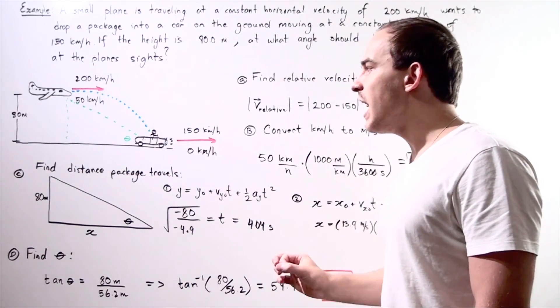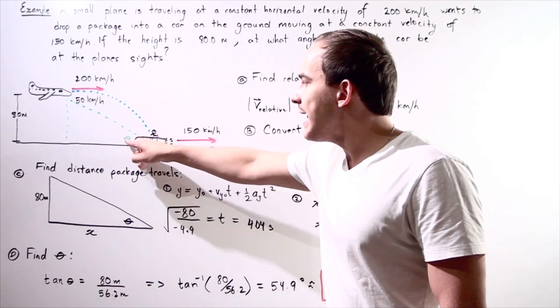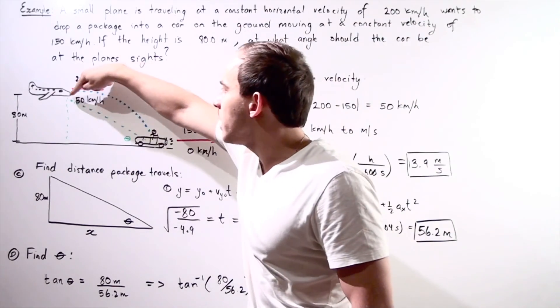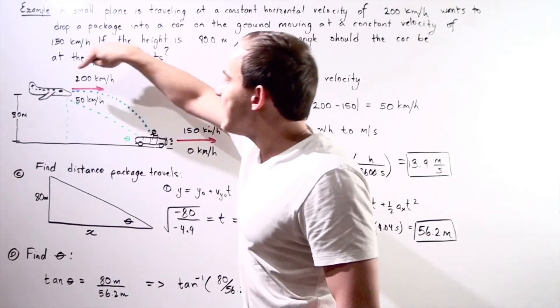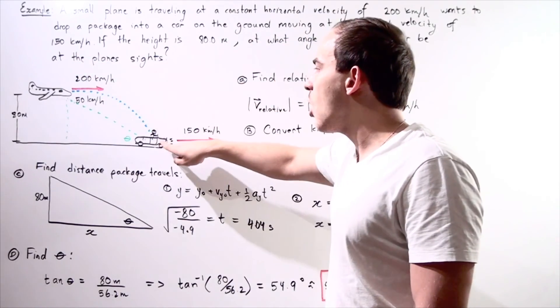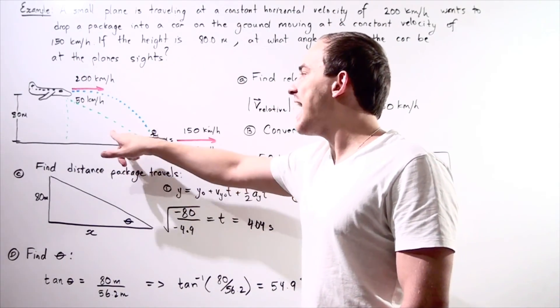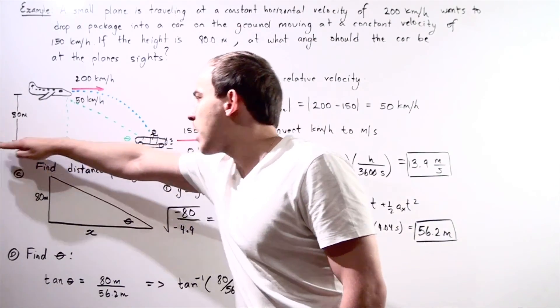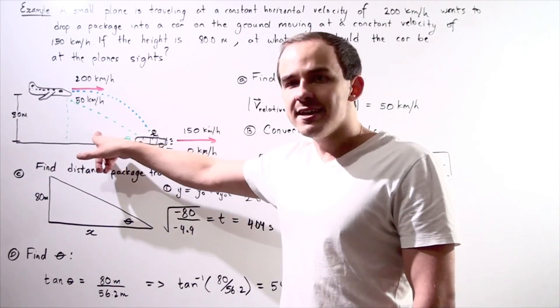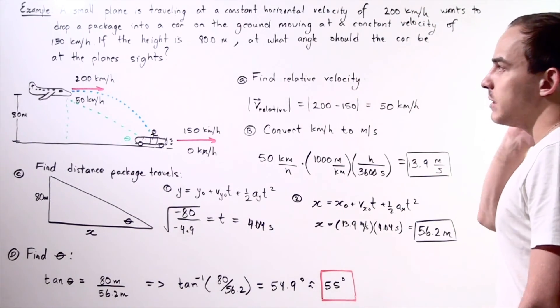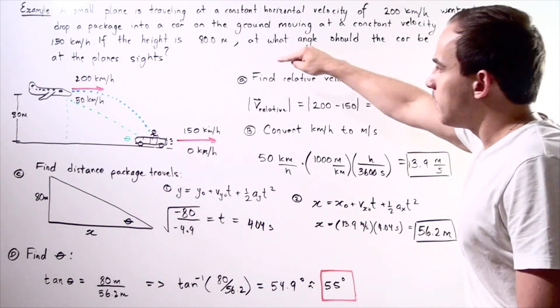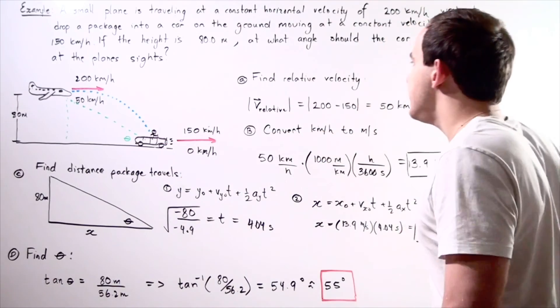We want to find the following angle. So let's pretend we draw and imagine a triangle where our hypotenuse begins at the plane and ends at the car. So we want to find what this angle with respect to our x-axis is. So in this problem, we're going to do this problem in four steps: part A, B, C, and D.